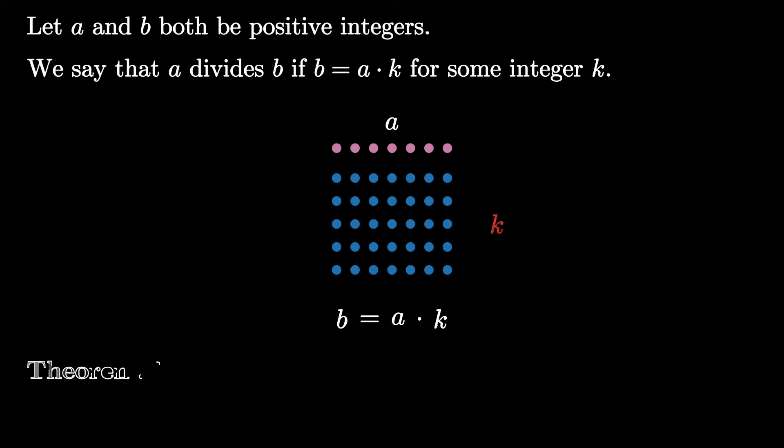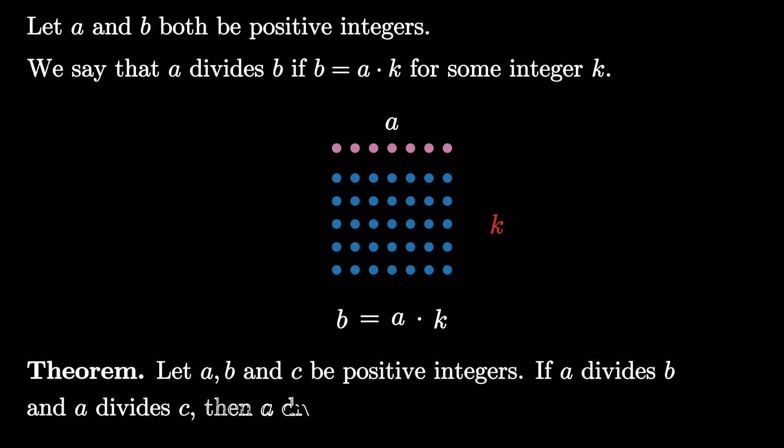Let's see how this works with a theorem. The theorem we will prove states that if a positive integer a divides positive integers b and c, then a also divides the sum b plus c.